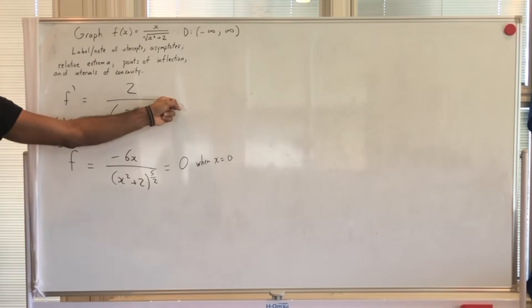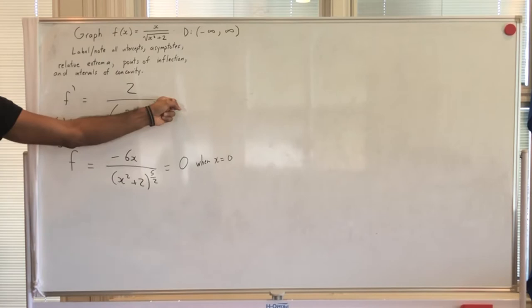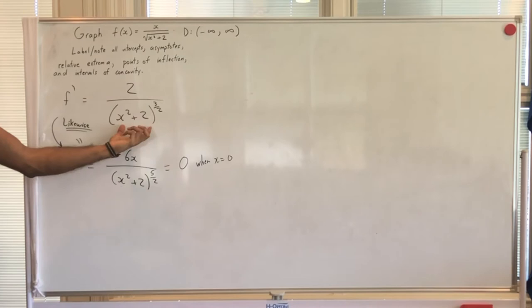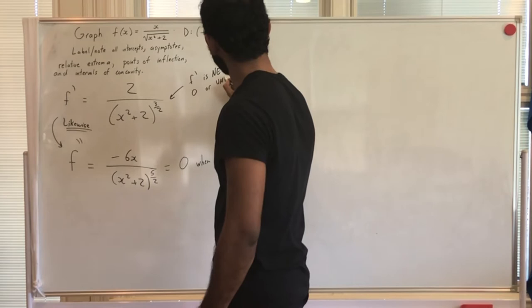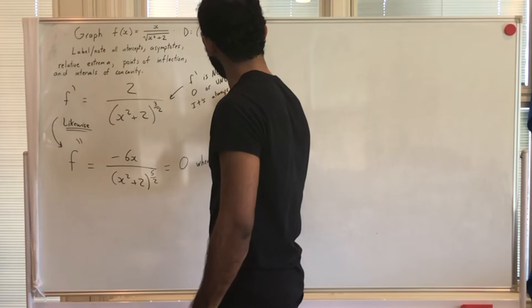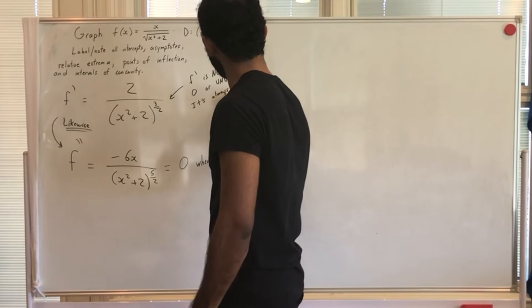Likewise, the first derivative: is it ever undefined? No — the denominator (x² + 2)^(3/2) is always positive. Is it ever zero? No — the numerator is 2, which is always positive. So the first derivative is never zero or undefined; it's always positive.